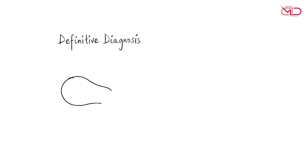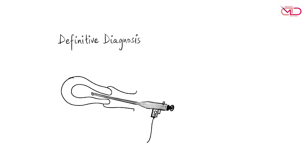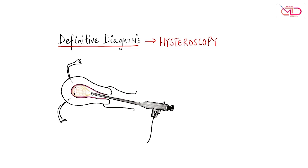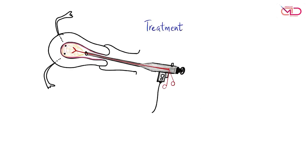However, definitive diagnosis requires looking inside the uterine cavity with a hysteroscope, by which we are able to visualize the adhesions and also see evidence of tuberculosis involvement of the endometrium. In the same sitting, instruments can be introduced inside the uterine cavity and treatment can be achieved by hysteroscopic adhesiolysis.